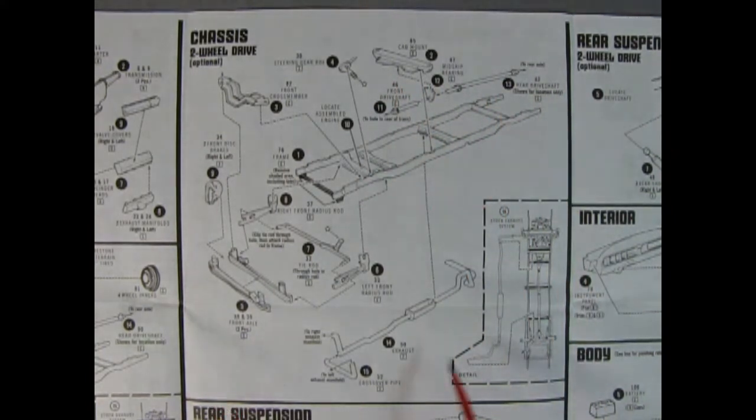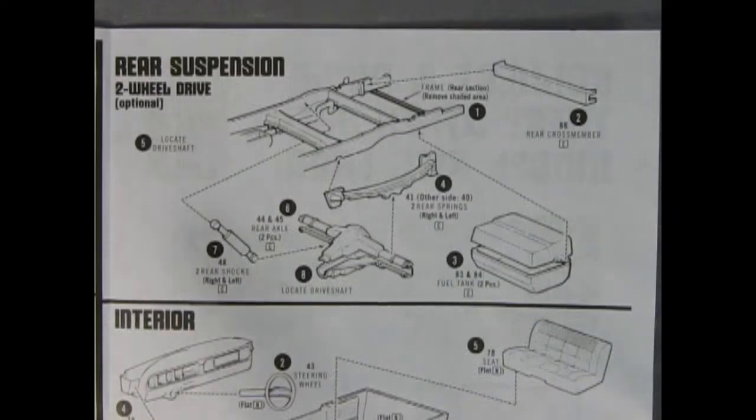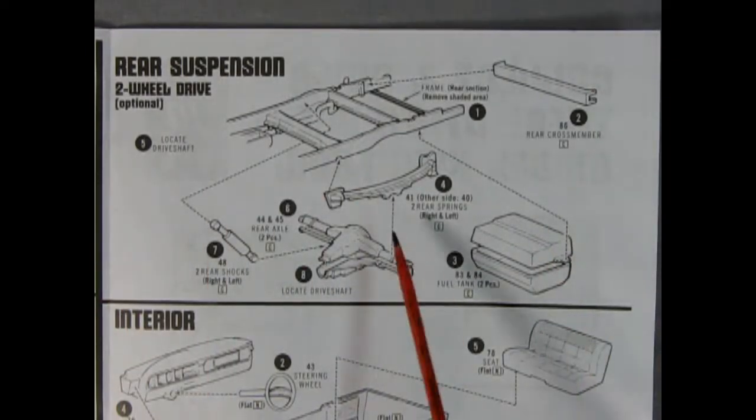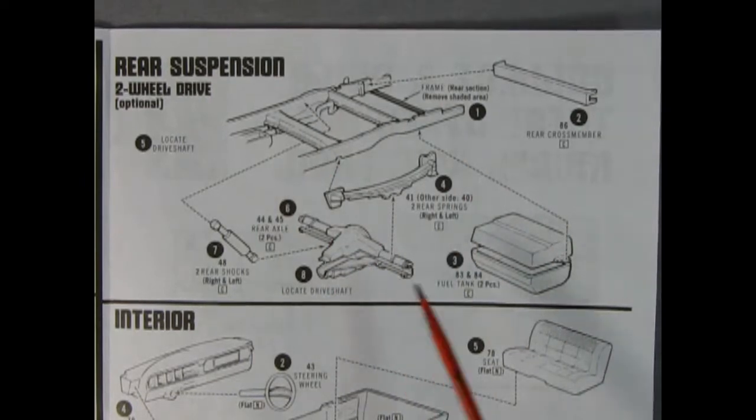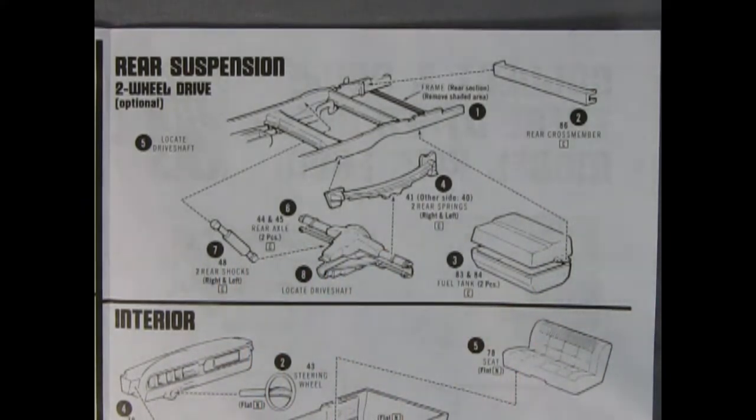Again you can see the many parts and just how great this model kit is. Here's the rear suspension for our two-wheel drive option. You got two leaf springs going in the back, a differential with an upper and lower half that you glue together to make one piece, two rear shocks, a rear cross member and a two-piece fuel tank.